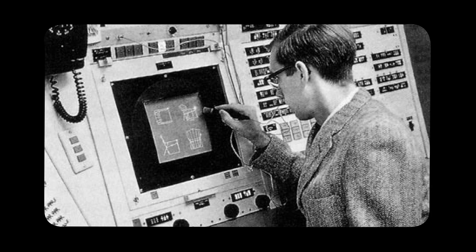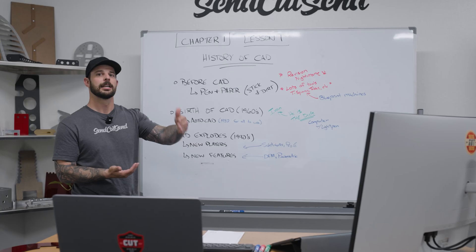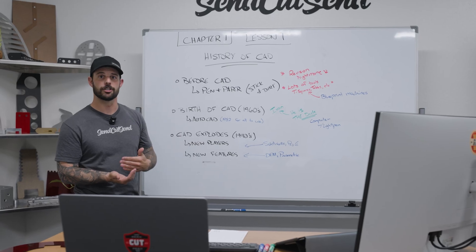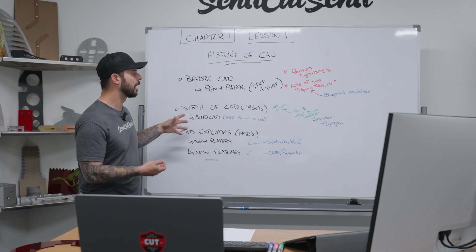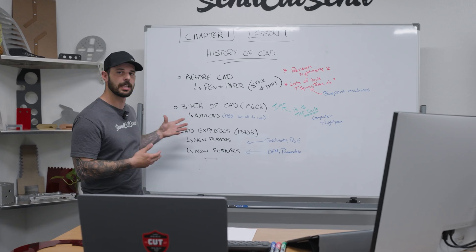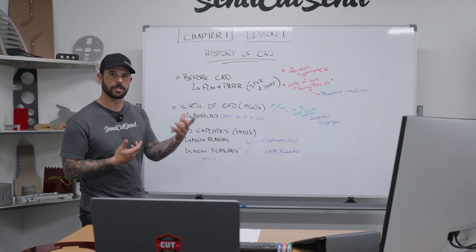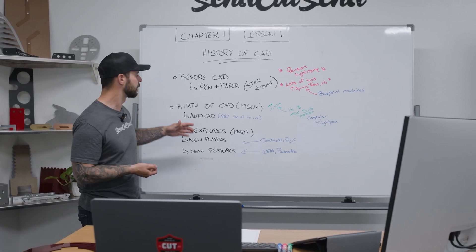In the 1960s, the main figure, Ivan Sutherland, came up with a way that computers could copy what you're doing using a light pen. This is what we think of as the birth of CAD — the first time a computer was assisting in revisions of drawings. It didn't have a lot of fancy dimensions or anything; it was just kind of copying us.